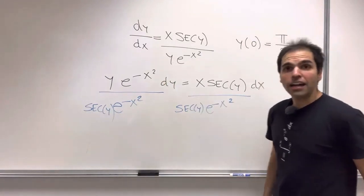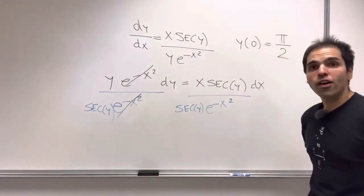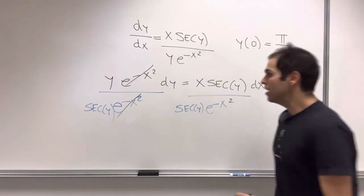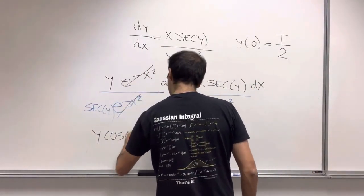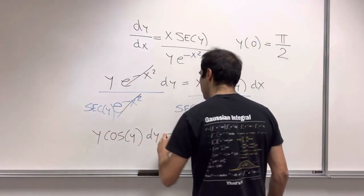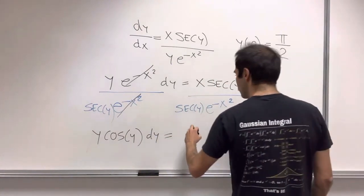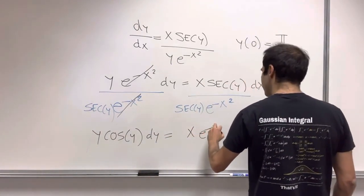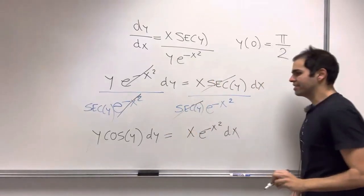And in fact, what this simplifies to is y over secant of y, which is y cosine of y. So on the one hand, we have y cosine of y dy. On the other hand, we get x e to the minus x squared dx, because here the secants cancel out.